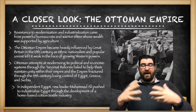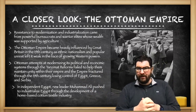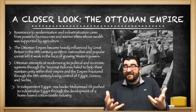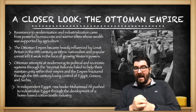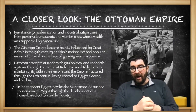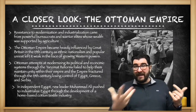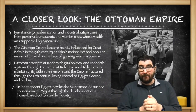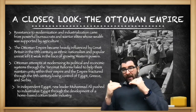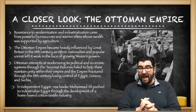The Ottoman Empire has long been one of the most powerful empires in the world — in fact, the longest-lasting empire covered in AP World, growing in the 1300s and lasting until the early 20th century. There's a lot of resistance to industrialization and modernization from powerful bureaucrats and warrior elites who see their wealth connected to traditional roles and agriculture. Like China, the Ottoman Empire becomes heavily influenced by Western powers, particularly Great Britain, and experiences ethnic nationalism and popular unrest. Some in the West refer to the Ottoman Empire as the 'sick man of Europe.'